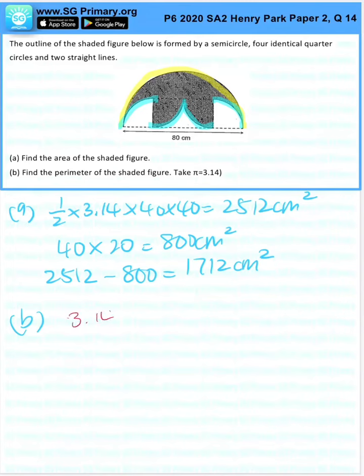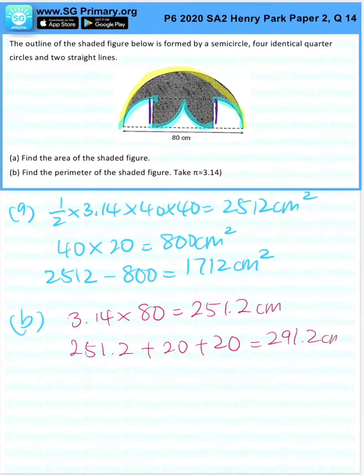So pi times 80 will give us 251.2 centimeters. And we still need to add these two in, which is 251.2 plus 20 plus 20, which gives 291.2 centimeters.